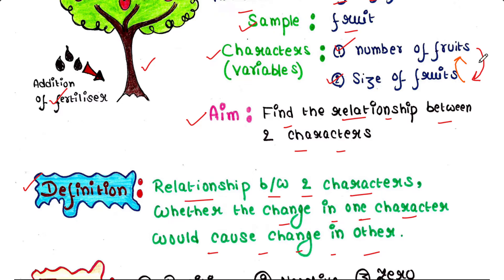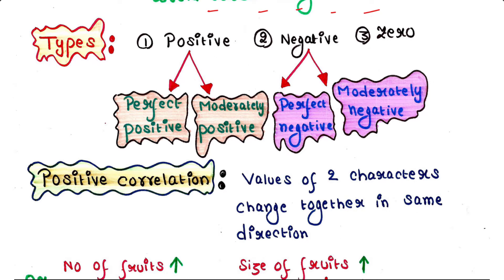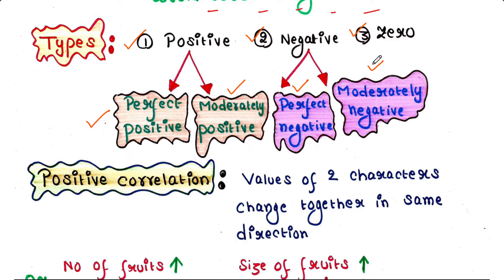There are three types of correlation: positive, negative, and zero correlation. Positive correlation is of two types: perfect positive and moderately positive. Negative correlation is also of two types: perfect negative and moderately negative.